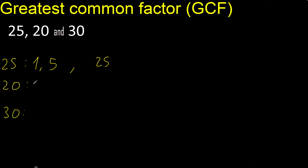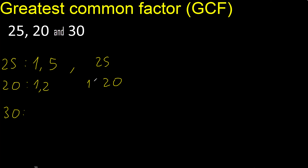Factors — divided by 1. Divided by 2 is 10. Cannot be divided by 3. Divided by 4 is 5. Next, 5. 5 is here.